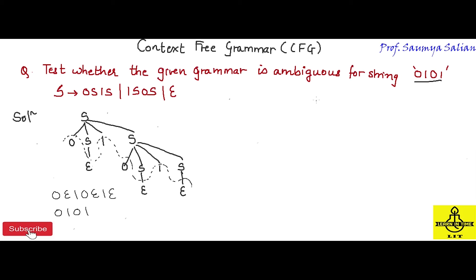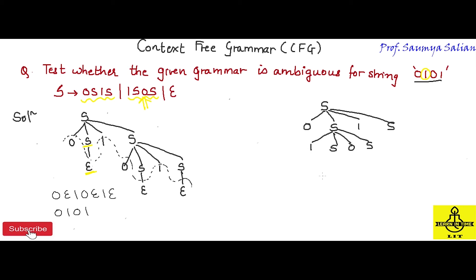Now let's see whether I can construct a different parse tree. I start again with S → 0S1S. Previously I substituted S → epsilon here, so I'll try a different rule. Looking at the string, I need a 1 next, so I use the rule S → 1S0S. So I substitute for this S the derivation 1S0S. For this S I substitute epsilon, and for this S I substitute epsilon.